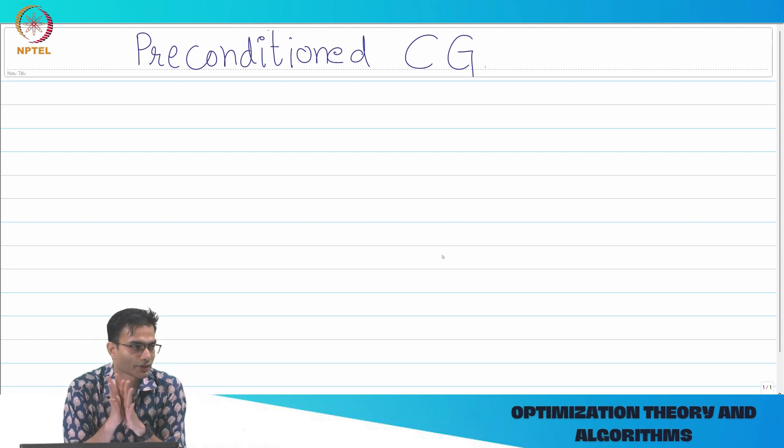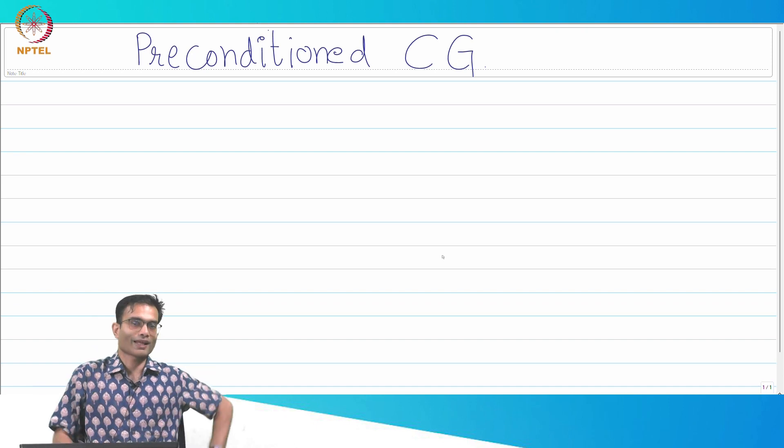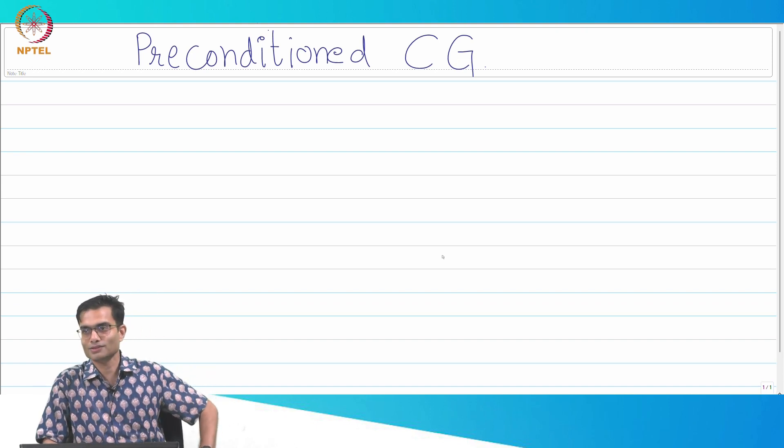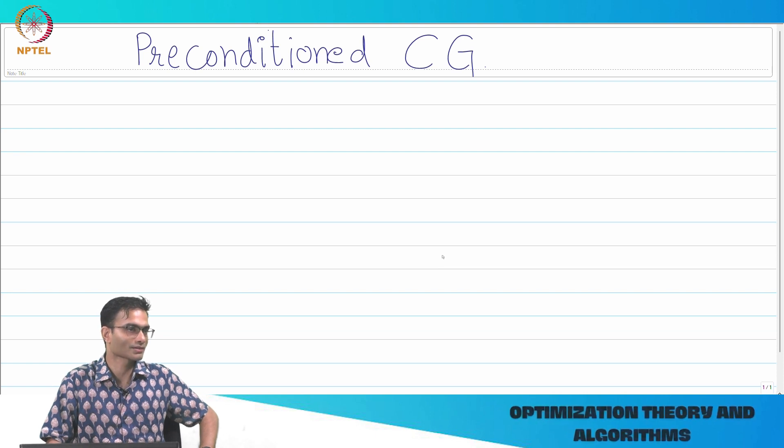Last time we looked at conjugate gradient method, we saw that it blows steepest descent out of the water. Today's class is to show you that all is not that hunky dory, there are places where it runs into trouble.